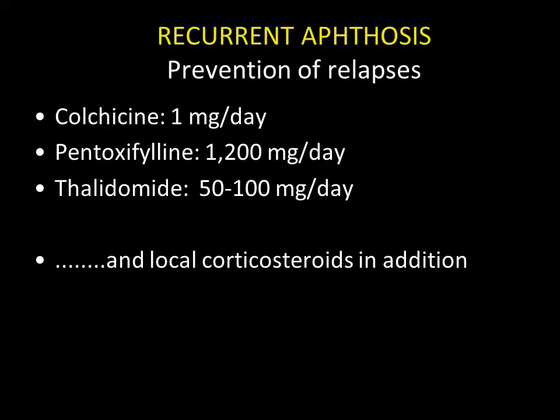First-line treatment of recurrent aphthosis is based on colchicine, one milligram per day long-term, with a reassessment every three months and a minimum treatment period of one year with gradual dose reduction. Colchicine treatment can be combined with 1,200 milligrams per day of pentoxifylline when colchicine monotherapy is not sufficiently effective.